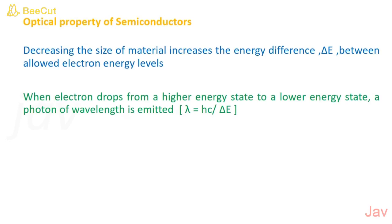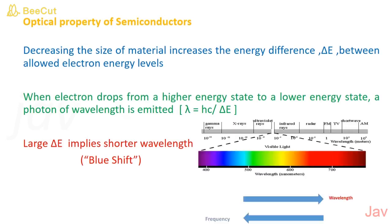In nanoscale, the energy gap is greater than energy gap in bulk. Large delta E implies shorter wavelength, blue shift. In nano form, the wavelength of the absorbed photon shifts to shorter wavelength, that is blue shift, and indicates widening of bandgap.